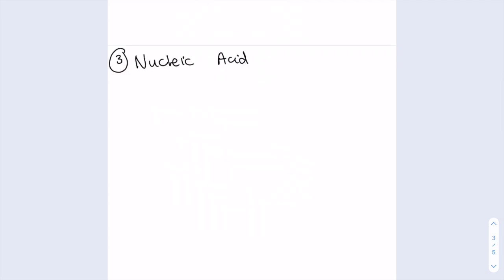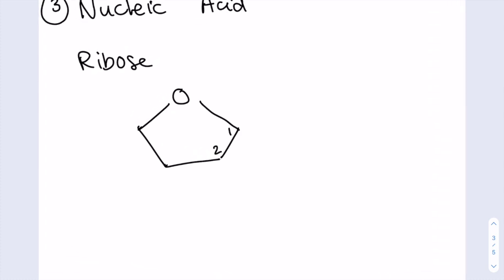So the third organic molecule that we need to know how to draw is nucleic acids, specifically ribose and deoxyribose. So ribose is a pentose because it has five carbons. And the way that you draw it is having an oxygen at the top, which is attached to this pentagon shape. Again, remember to label the carbons 1, 2, 3, 4, and 5, starting with this right-most carbon.